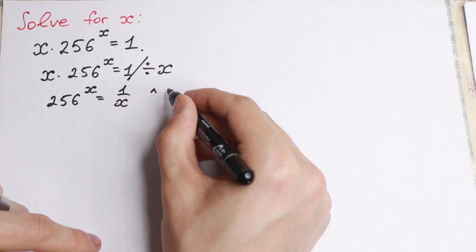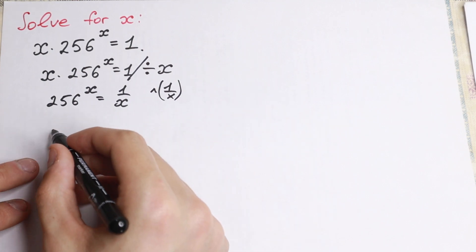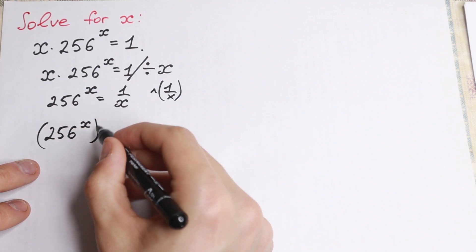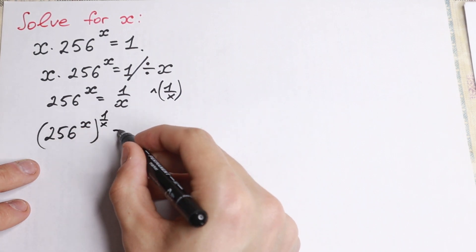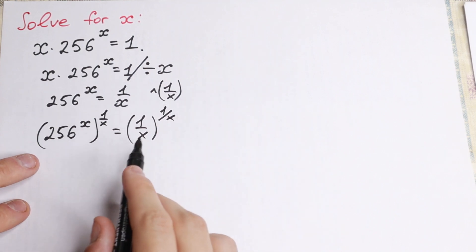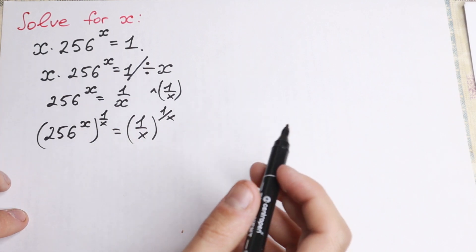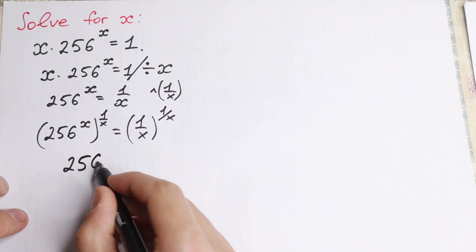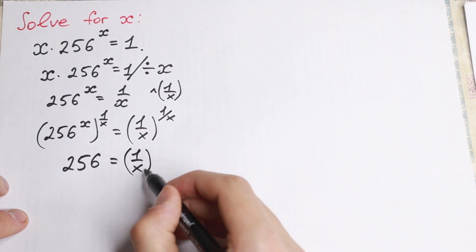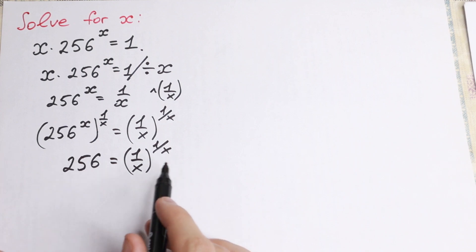Let's raise both sides to the power 1 over x. On the left-hand side, raising 256^x to the power 1 over x gives us 256, because x times 1 over x equals 1. So on the left-hand side we have only our constant 256, equal to 1 over x to the power 1 over x.